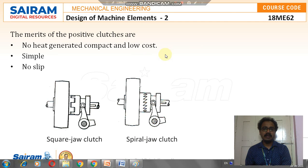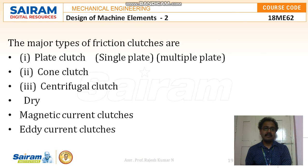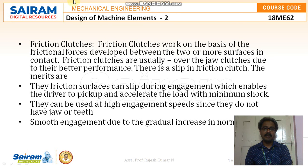Friction clutches work on the basis of frictional forces developed between two or more surfaces in contact. Friction clutches are generally preferred over jaw clutches due to their better performance, though there is slip in a friction clutch. Their merits are: the friction surfaces can slip during engagement, enabling the driver to pick up and accelerate the load with minimum shock; they can be used at high engagement speeds since they have no jaws or teeth; and they provide smooth engagement due to the gradual increase in normal force. Major types will be discussed in the upcoming video.